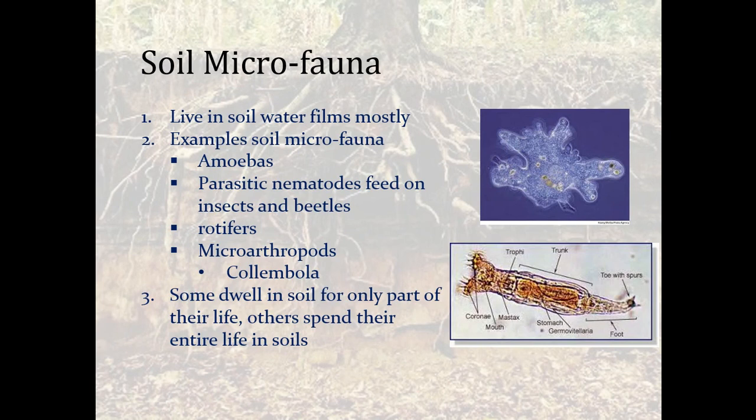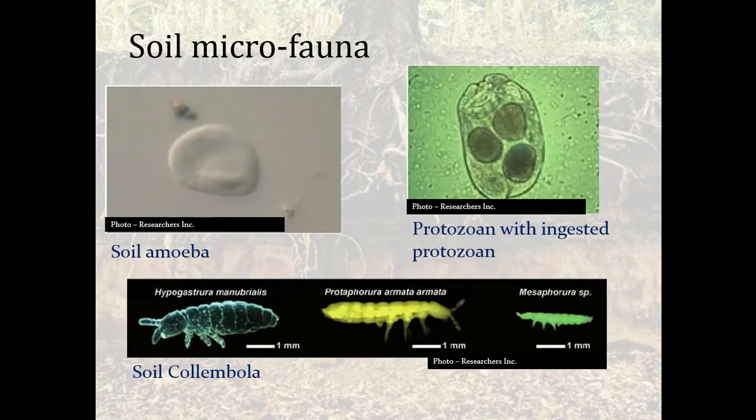Microfauna live in water films in the soil. Things like amoebas and nematodes can dwell in the soil for only part of their life cycle, while others spend their entire life in the soil — it just depends on their life cycle. There are pictures here of an amoeba, a protozoan, and what appears to be some columbula.